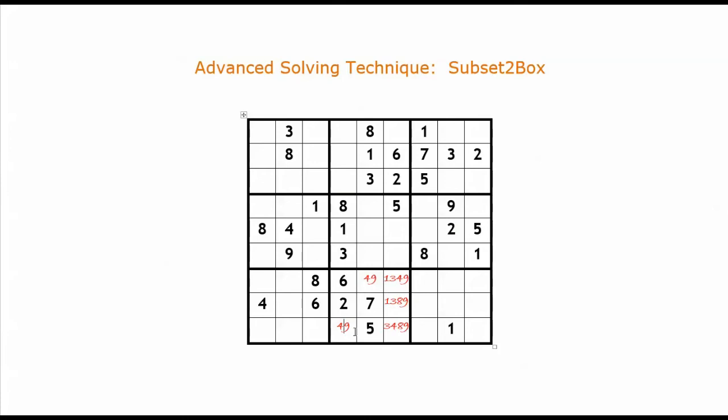Notice that for these two empty squares, either four is here and nine is there, or nine is here and four is there. So number four and number nine must be in these two empty squares. Therefore, we can safely remove four and nine from the other empty squares in this mini box.